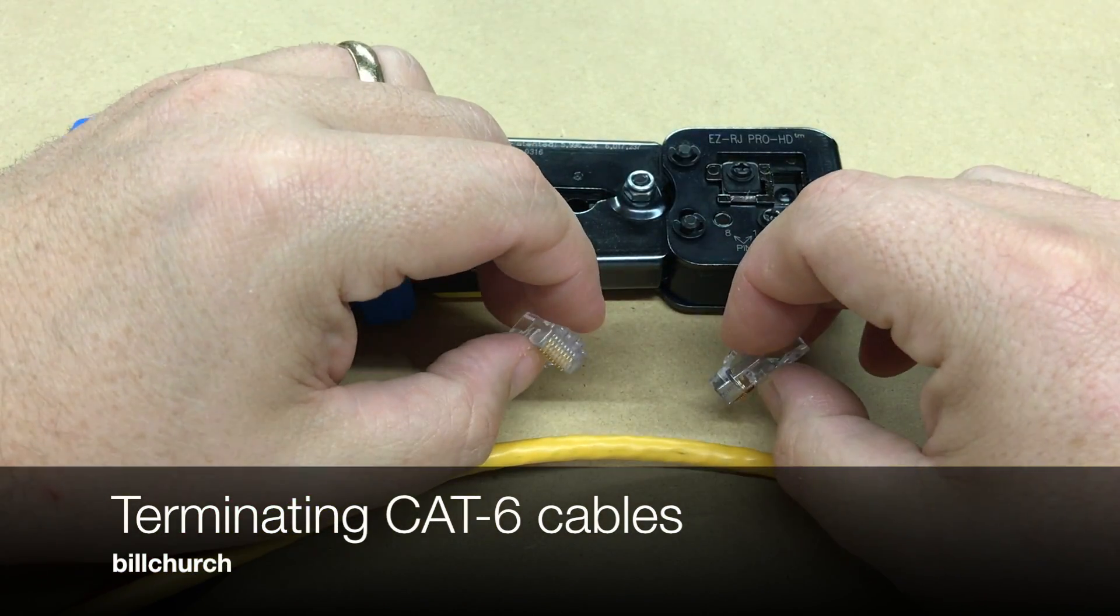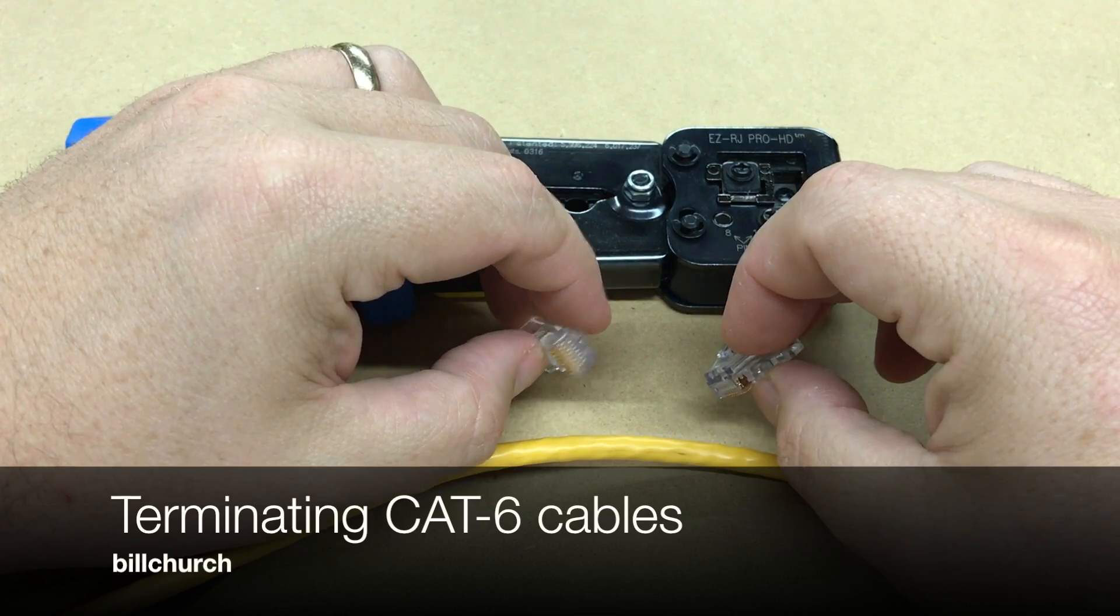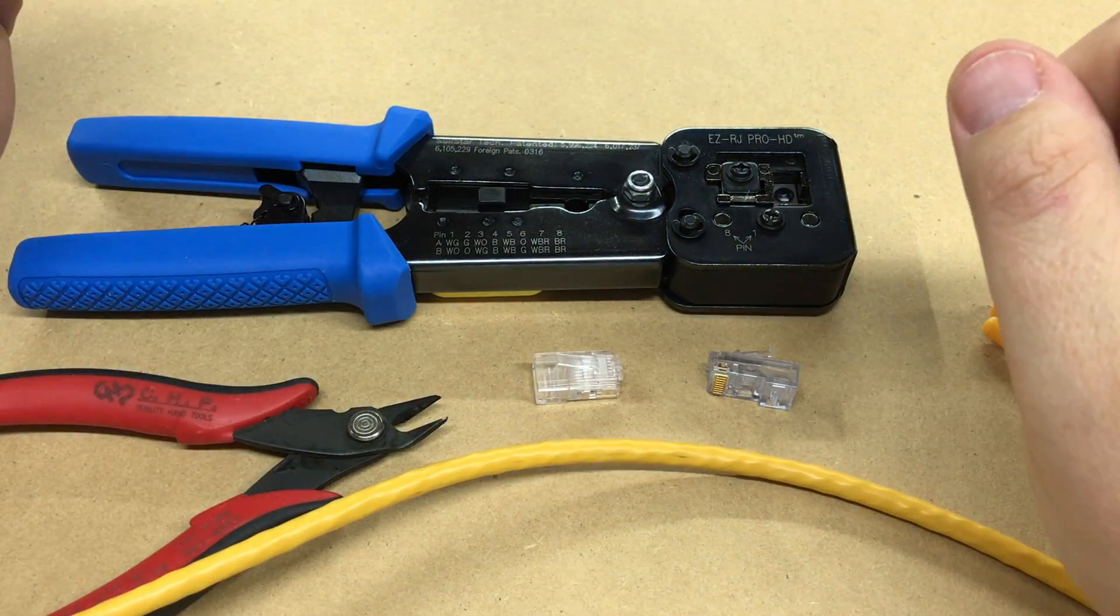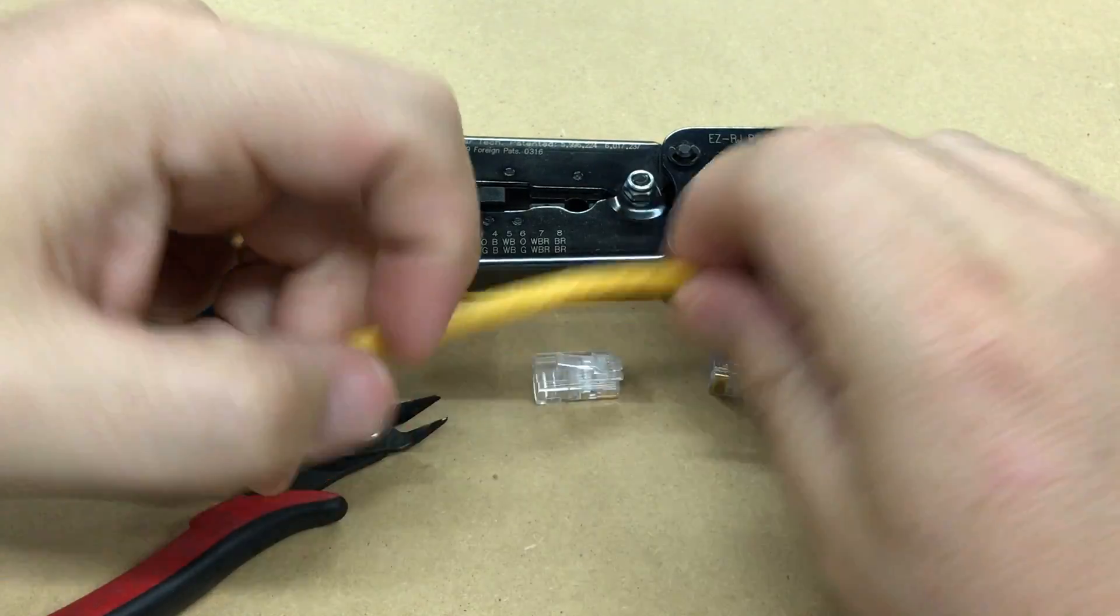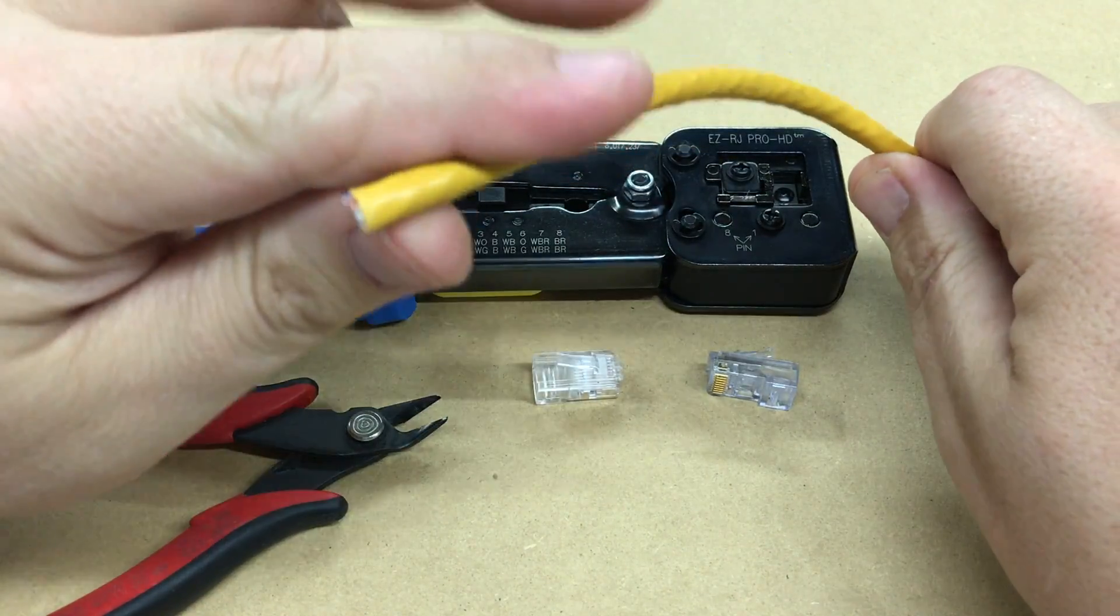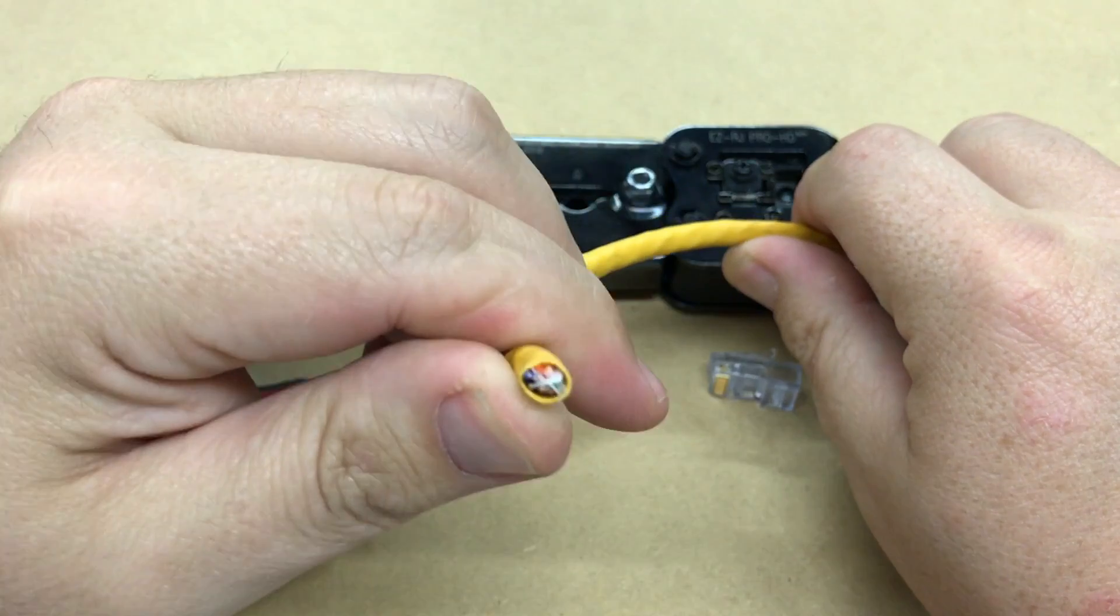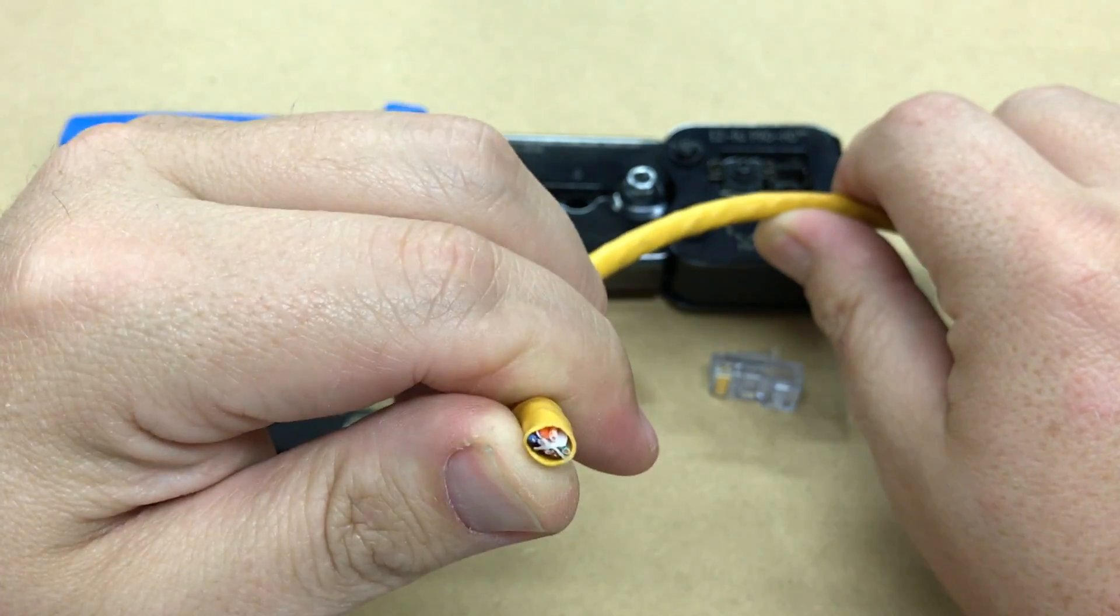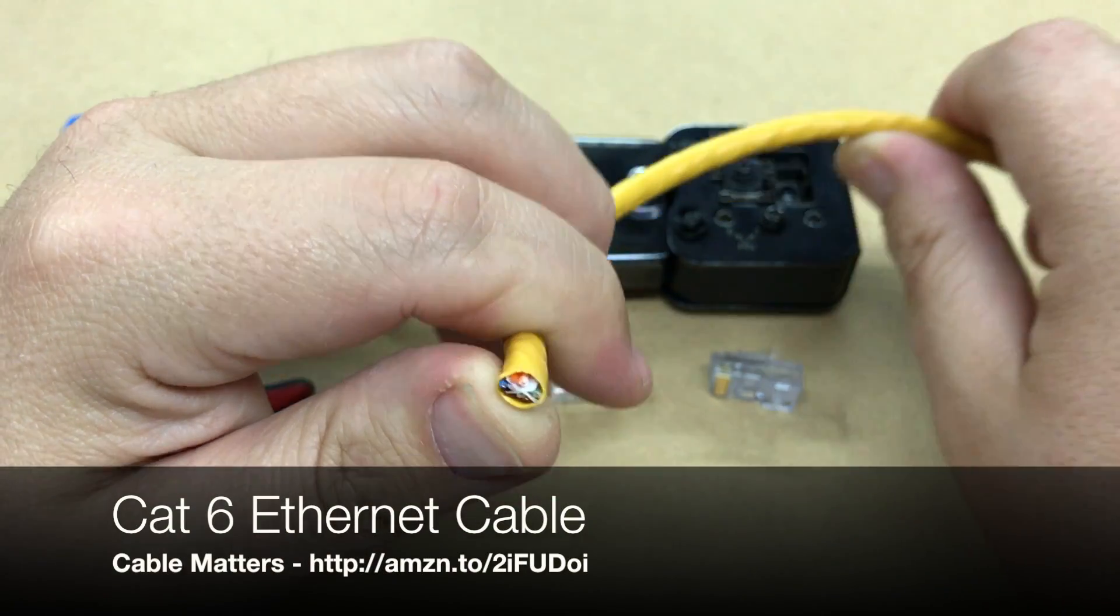Someone asked me how I deal with Cat6 cables and terminating them. They're a little bit thicker, and if you get good cables, the actual wires inside are gonna be higher gauge or thicker gauge. This is 23 gauge; I think standard is about 24.